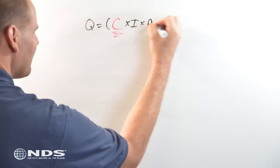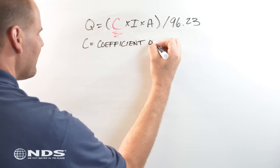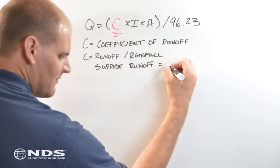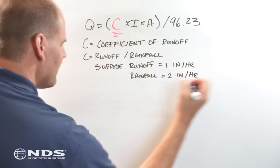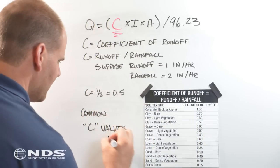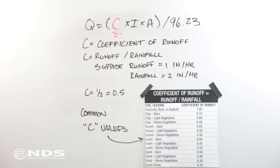C is the runoff coefficient. This is essentially the percentage of water that runs off of a given surface. For example, if rain is falling at 2 inches per hour, and only 1 inch per hour is running off of the surface, the C value for that surface is 1 divided by 2, or 0.5.